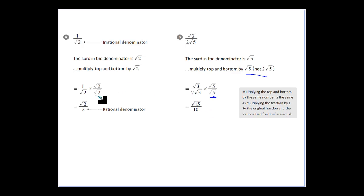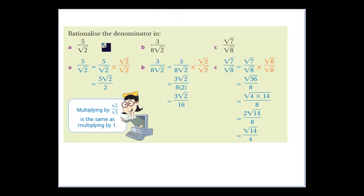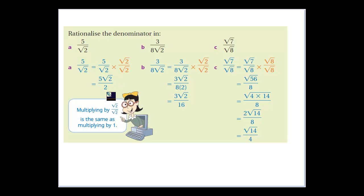Multiply by the same on top and bottom to get rid of the irrational part of our denominator and rationalize it. Here's another example: 5 over root 2. Multiply the top and bottom by root 2, which gives us 5 root 2 over 2. You might think it hasn't changed it much — and really it hasn't, because we've still got a surd in there — but there's no surd in the denominator, and that's the key.